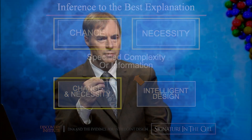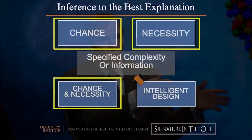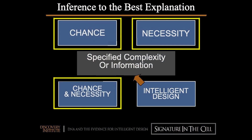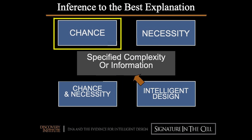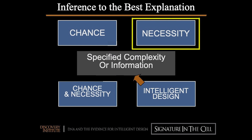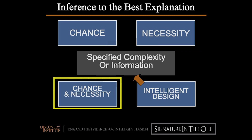And the attempts to explain the origin of the information necessary to produce the first life have fallen in one of those three buckets — either chance explanations, those by reference to natural laws, or those by reference to the combination of the two.